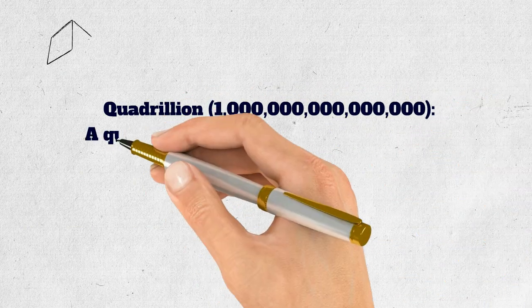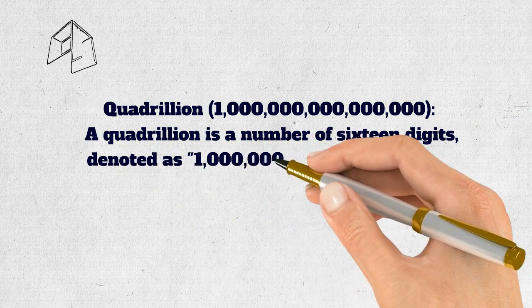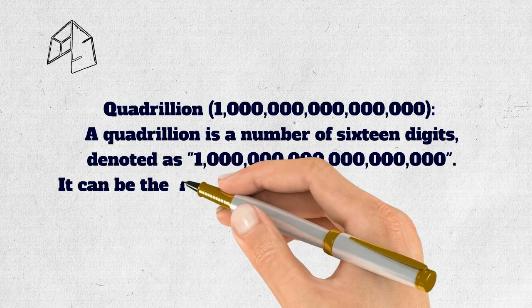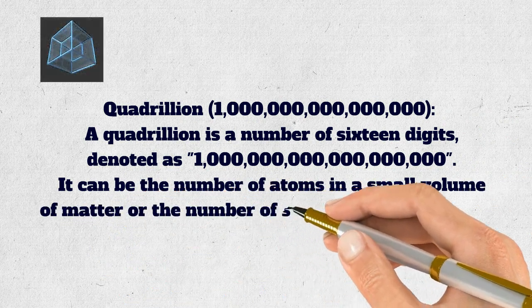Quadrillion. A quadrillion is a number of 16 digits, denoted as 1,000,000,000,000,000. It can be the number of atoms in a small volume of matter or the number of stars in the vast cosmos.